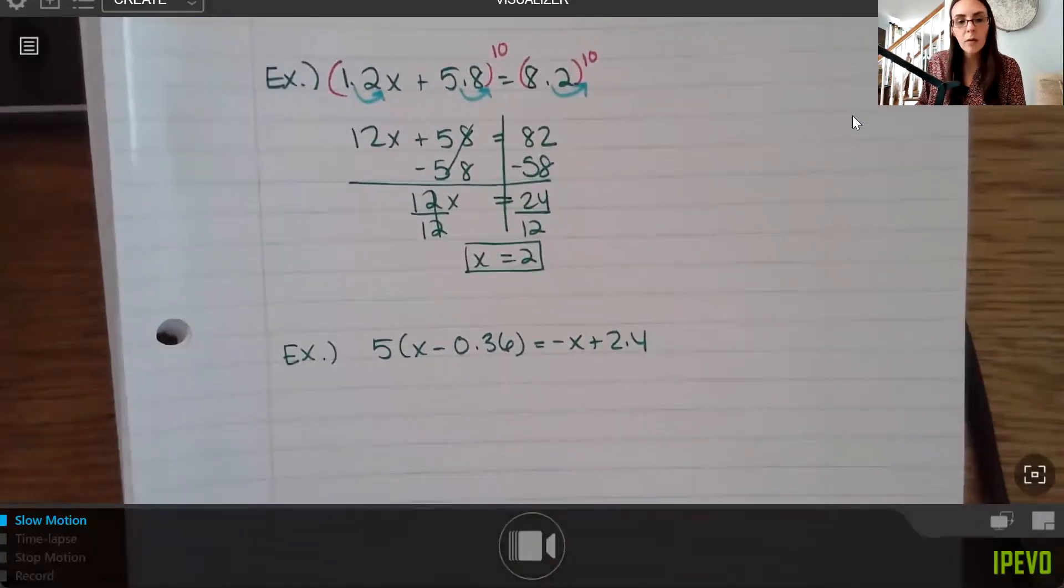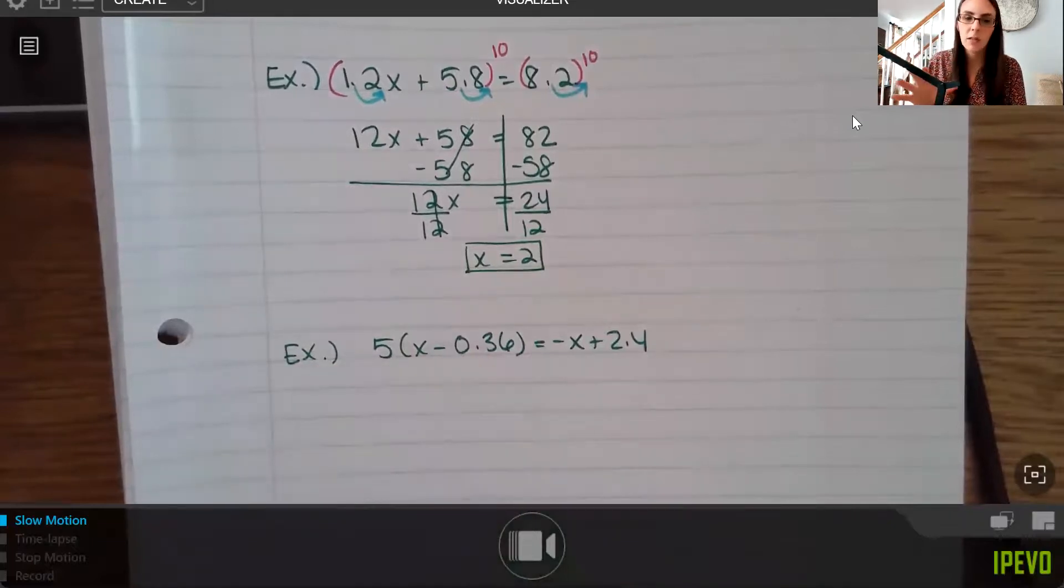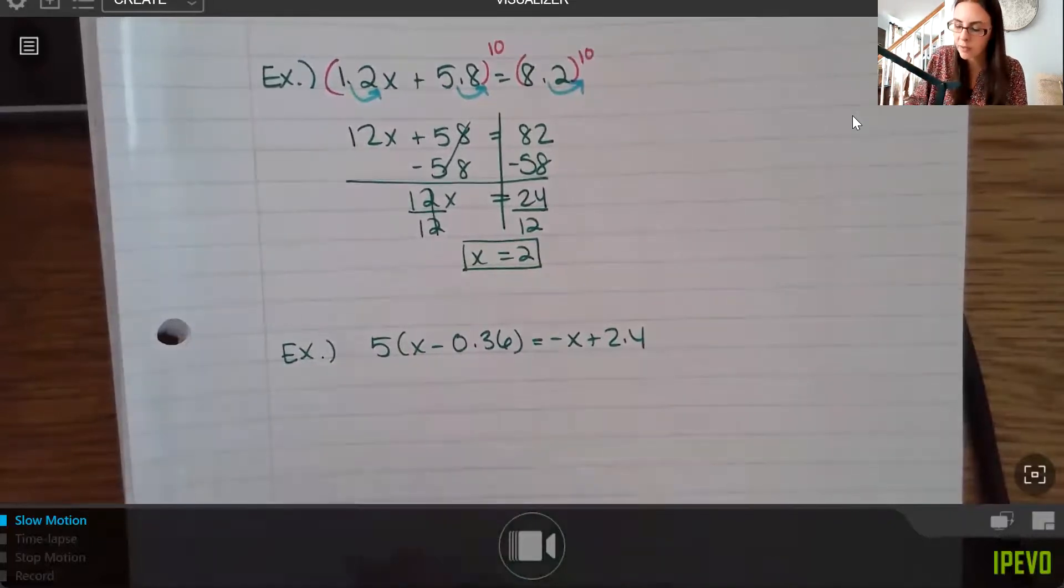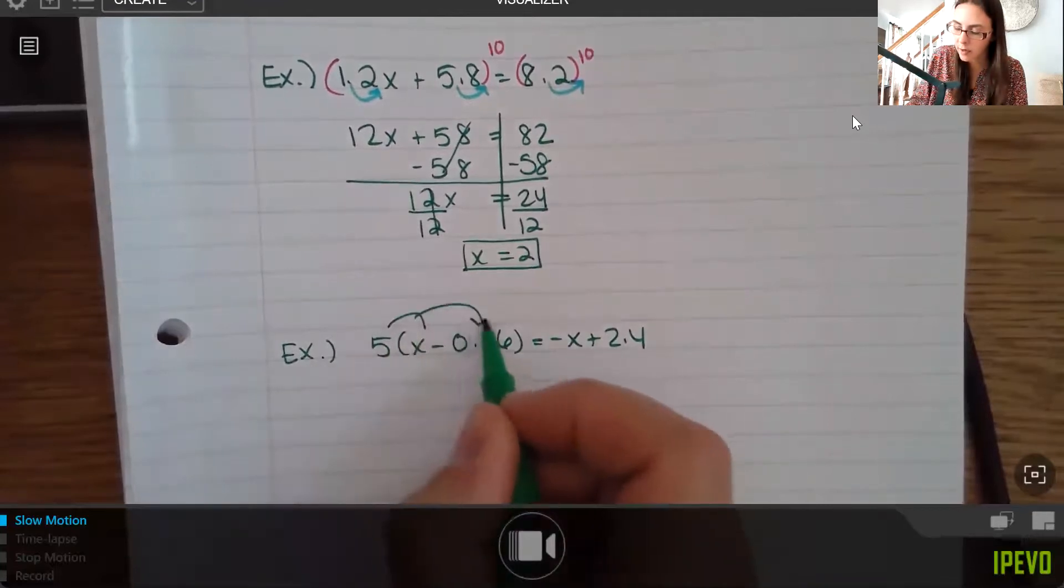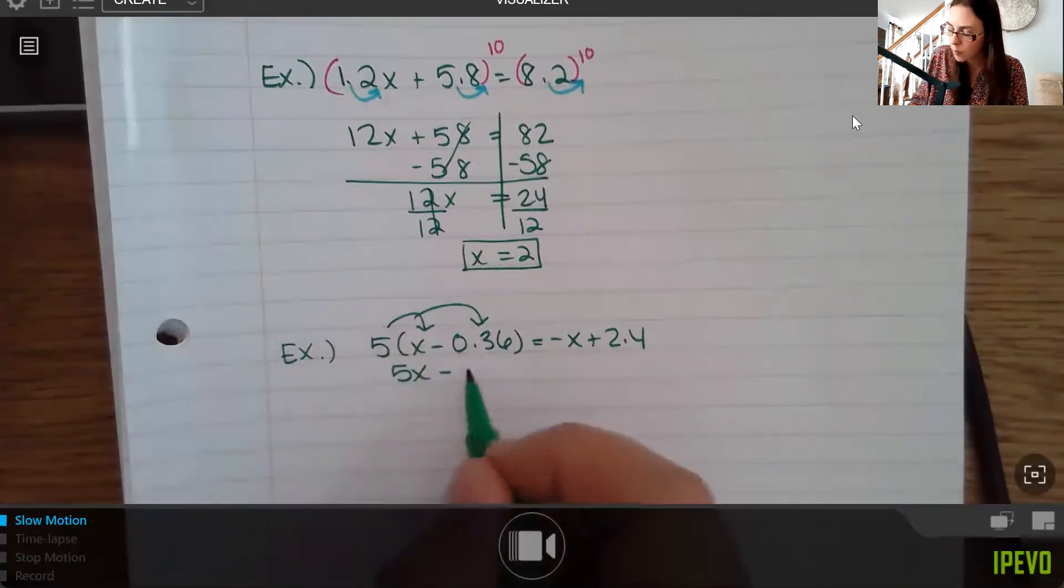Now, for the other example, I do still recommend doing parentheses first. It gets really weird here when there's decimals inside parentheses. They kind of cancel a little bit strangely. So I don't recommend doing the decimal first. I recommend still doing your parentheses first. So I know you still have a little bit of work there if you had to multiply this out. But I do recommend doing that first. You would get 1.8.